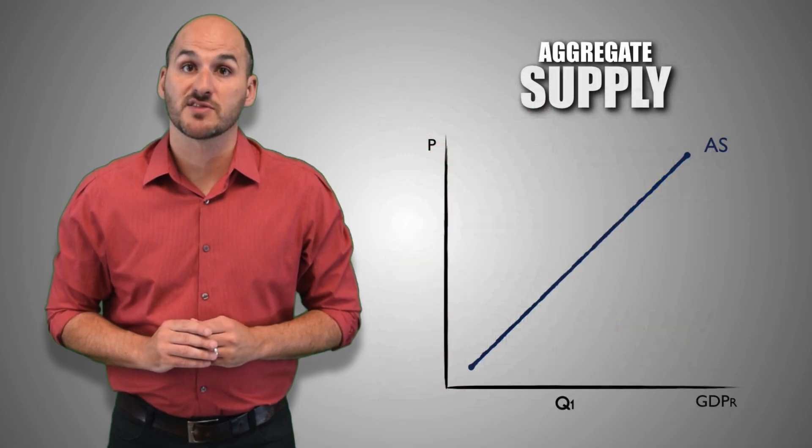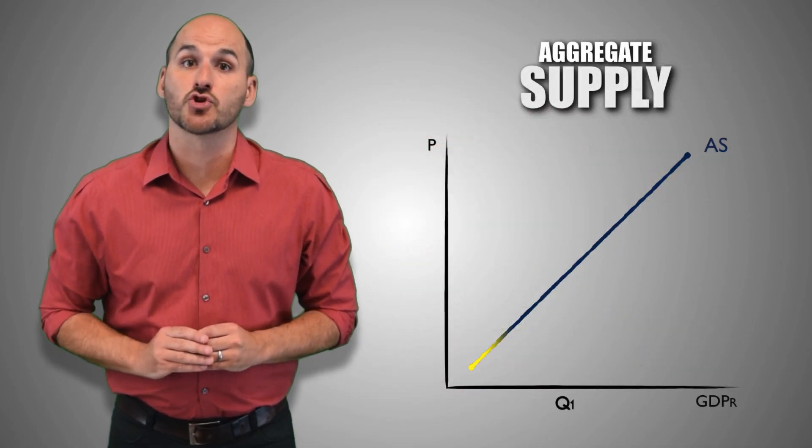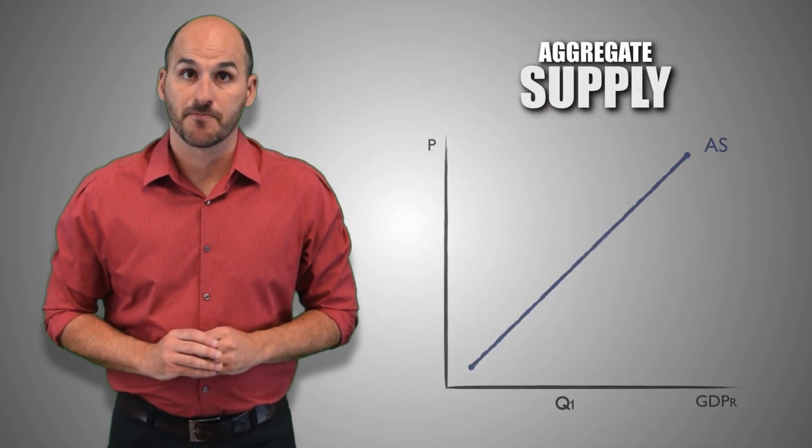And so in macroeconomics, the profit motive causes the short-run aggregate supply curve to be upward sloping.